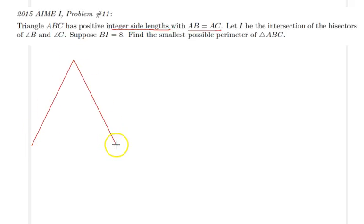For this triangle, so that's our triangle ABC. We know that AB is equal to AC, and we are also given that I is the intersection of the bisectors of angle B and C.